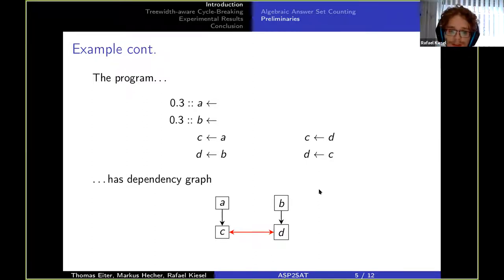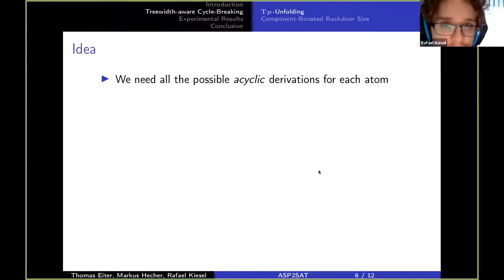Meaning that we are therefore not guaranteed that Clark completion gives us the same models as we have answer sets. So in order to get rid of these cycles we use the following idea.